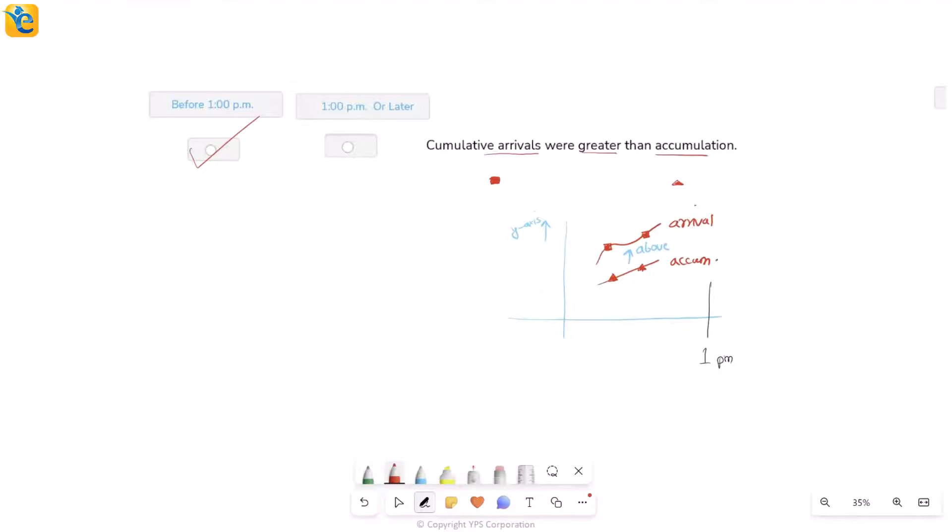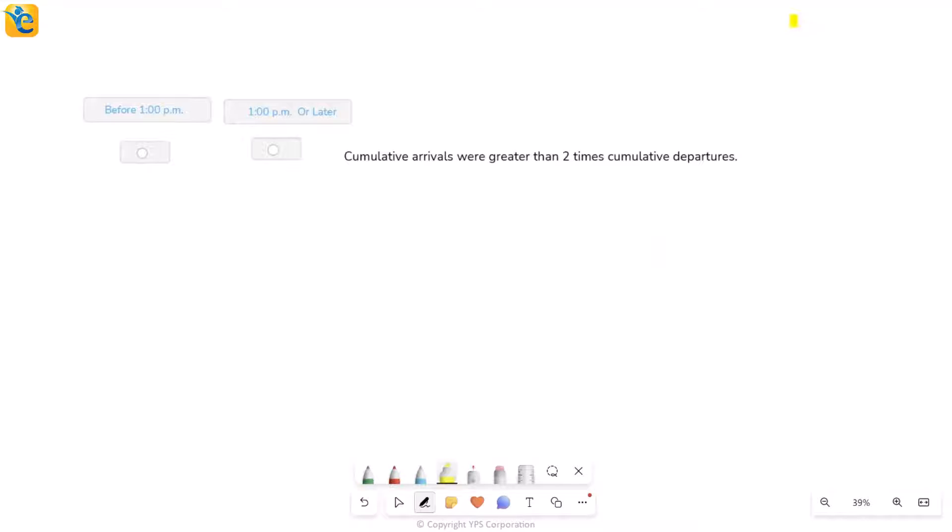Now, let's look at the second choice. This one says cumulative arrivals were greater than two times cumulative departures. So if I translate this into a mathematical looking statement, arrivals were greater than two times departures. So I will have to see the first time this happened because this is guaranteed to have happened. I just want to see if the first time this happened was before 1 pm or not. So I'll try to find an occurrence like this on the left side. Now, this time it's not as straightforward as the previous statement was where you just had to see one thing above another. This time you also care about what these values are.